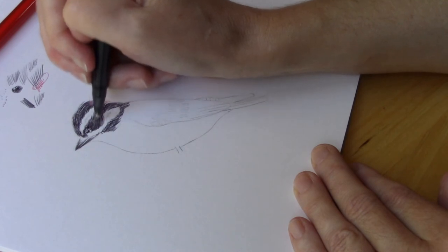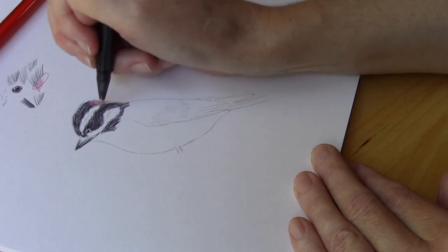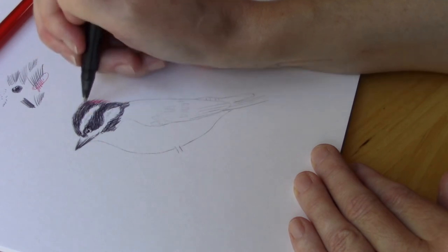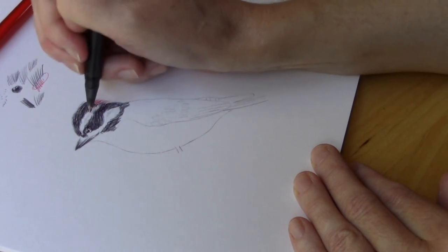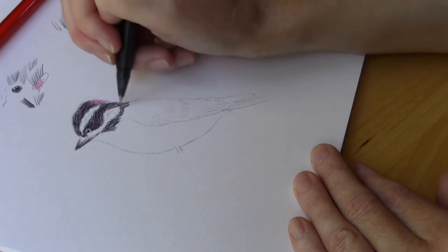Because on a bird it wouldn't be just solid. You would see feathers that overlap and the overlapping would cause shadows. So that's all we're trying to do is just simulate the little shadowy bits.